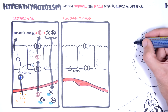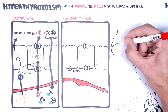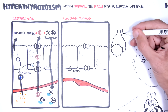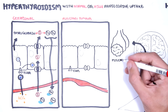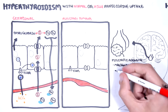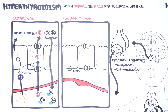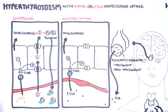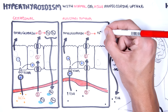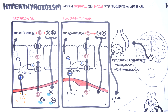Autonomous secretion of thyroid-stimulating hormone by a pituitary adenoma is a rare cause of hyperthyroidism. A pituitary adenoma, whether malignant or non-malignant, causes an increase in TSH production. With more TSH in circulation, the TSH receptor is stimulated, increasing thyroglobulin and iodine in the colloid, leading to more T3 and T4 entering circulation and resulting in hyperthyroidism.